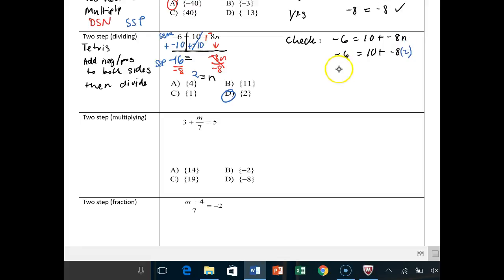And then you're asking yourself, okay, is negative 6 equal to 10 plus, this gives us, negative 16. And then is negative 6 equal to, what is 10 plus negative 16? Well, that's a DSSM. Different signs subtract. Keep the sign that has more. So 16 minus 10 is 6. And we had more negatives. Negative 6. So yes, we are correct. All right.